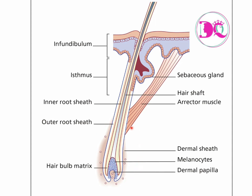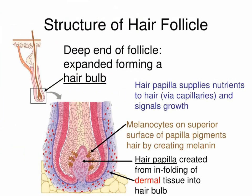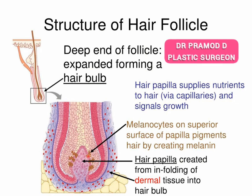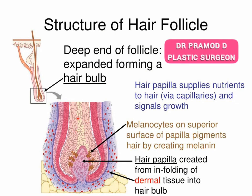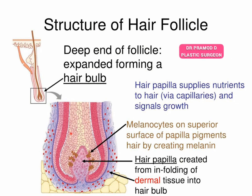Whatever treatment we give, we will target this lively part of the hair. This is a zoomed-in picture of the root of the hair. A lot of cells are present here and these are the cells which will be actively dividing. This brown color thing you are seeing is the melanocytes, which give pigmentation or color to the hair. Any changes occurring in this part of the hair will be reflected as increased or decreased growth or change in color of the hair.